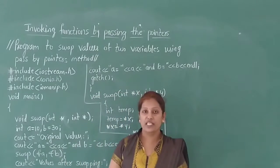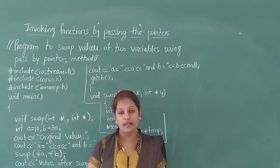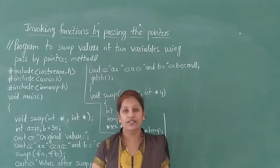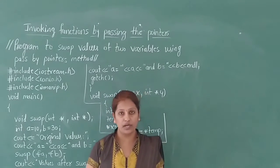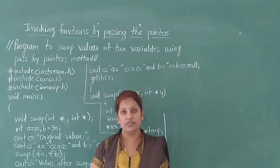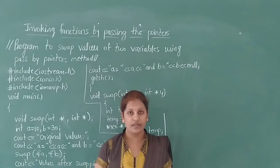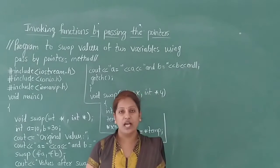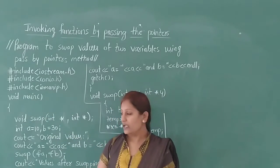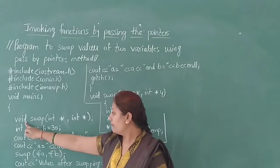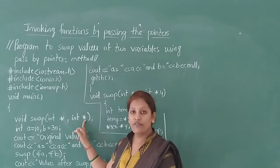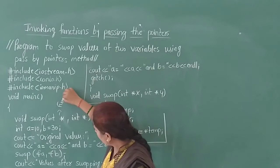Program to swap values of two variables using the pass by pointers method. To write this program, we first include three header files: iostream.h, conio.h, and iomanip.h — to connect input-output devices to the program file during execution, to execute cin and cout statements, and to use manipulators. Next, the main function is defined, and a function prototype for the swap function with integer pointer variables is declared.